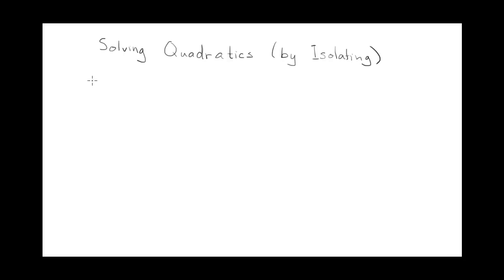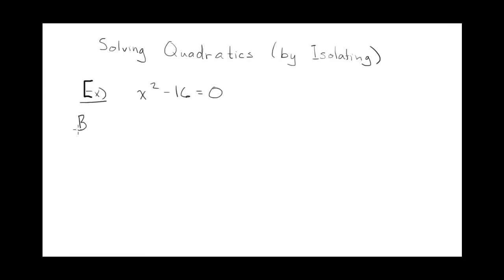Welcome to our lesson on solving quadratic equations by isolating. We'll start with a simple example: x squared minus 16 equals 0. There are two ways we could do this. One would be the way we're used to, which would be by factoring.